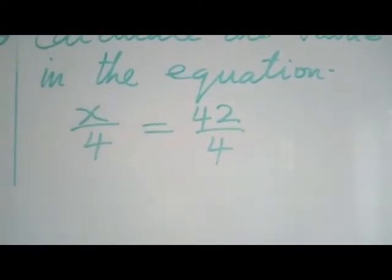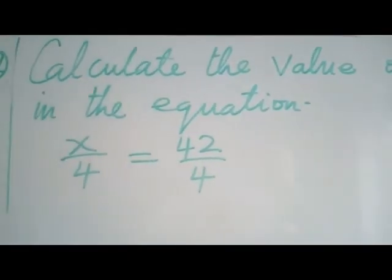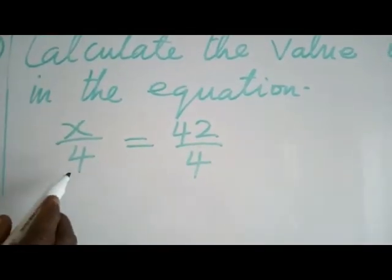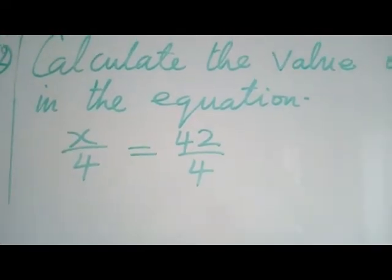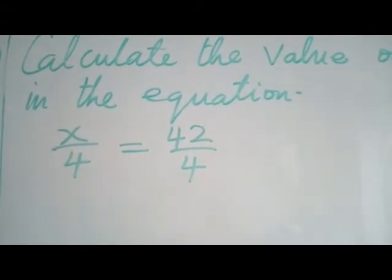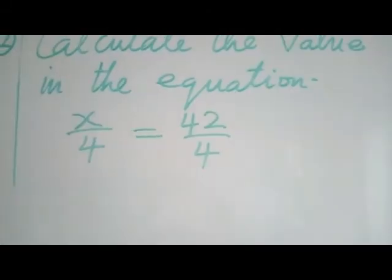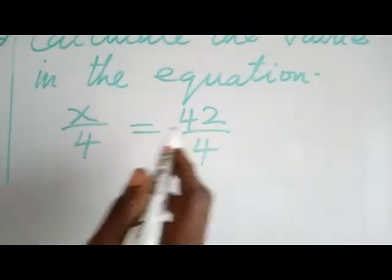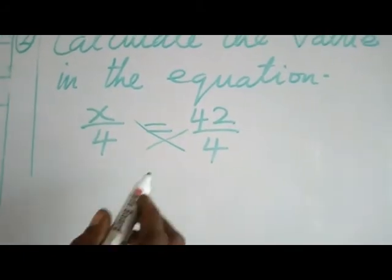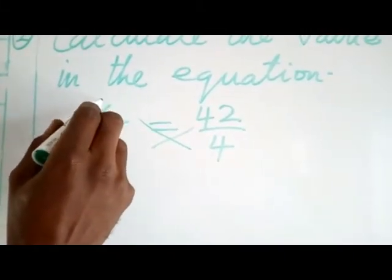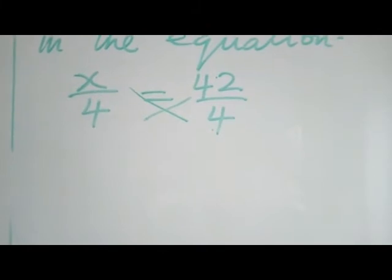We're going to look at example 2. Calculate the value of x in the equation below. The equation is x over 4 is equal to 42 over 4. Now, we have x which is an unknown number. We want to look at the value of x. When a fraction is equal to another fraction, the rule is that you use cross-multiplication. I'm going to cross-multiply. Cross-multiply means multiply the up by the down and multiply the up of this number by the denominator.